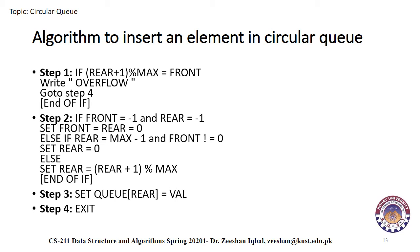In step one, we check the overflow condition. In step two, if the queue is empty, we insert the new element as the first value. In the else case, we apply rear equals rear plus one modulus max to get the new value of rear. In step three, we add the new element into the rear position of the queue by taking the value as an argument in the function.